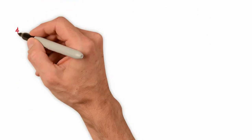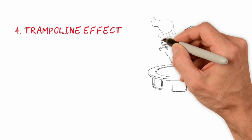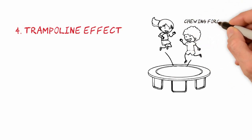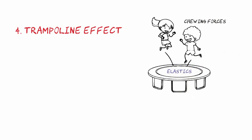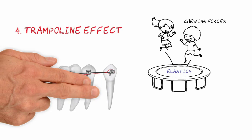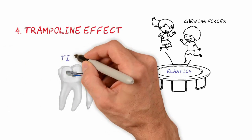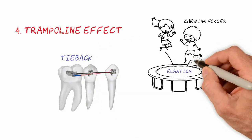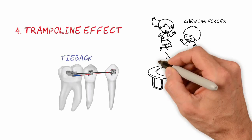Analogy number 4 is the trampoline effect. There is a hypothesis with no scientific evidence that states that the intermittent forces of mastication are capable of reactivating elastic modules used in the closing of space. According to the theory, even when the patient misses appointments for normal adjustments, the closure of space continues to be stimulated by chewing forces that would be able to reactivate an apparently inactive elastic.